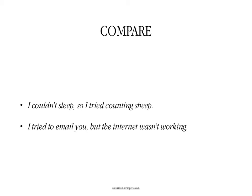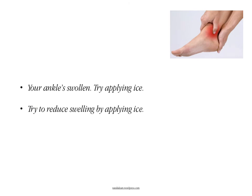Look at these two sentences. In the first one, the problem is I couldn't sleep, so to solve it I used this method: 'I tried counting sheep.' In the second sentence, 'I tried to email you' — this was my objective, my intention — but the internet wasn't working. The first sentence describes a method used to reach a goal (sleep), while the second describes the goal itself (emailing you).